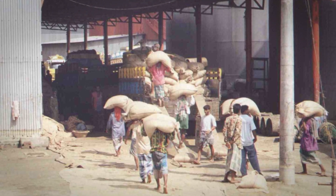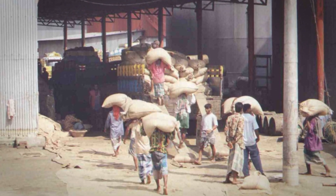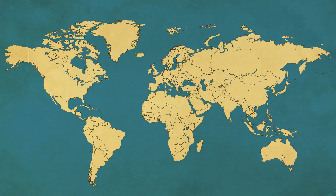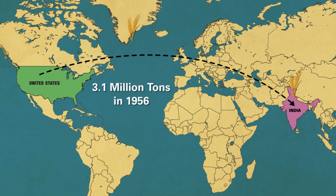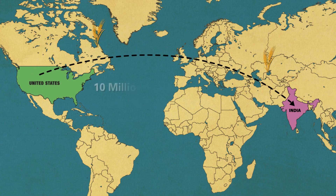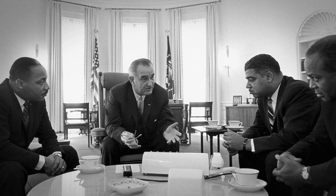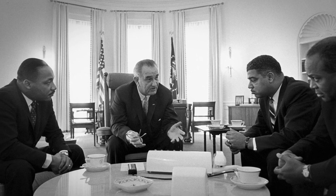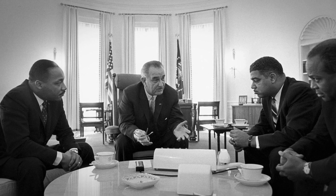This gave rise to the phrase 'ship to mouth.' Beginning with 3.1 million tons in 1956, the PL-480 imports shot up to 10 million tons in 1966. But US President Lyndon Johnson was threatening to cut wheat supplies under PL-480.